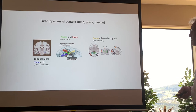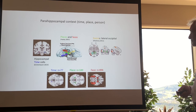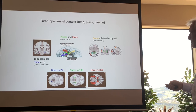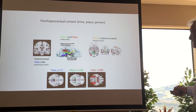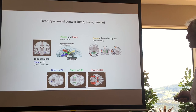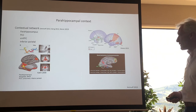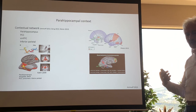A meta-analysis confirms that time is processed in the posterior, more medial part of the parahippocampal area; place is located just anterior of the time area; and face is even more anterior of the place and time area. The parahippocampal area is therefore perfectly suited to give information about time, place, and person to be integrated into the self-percept.